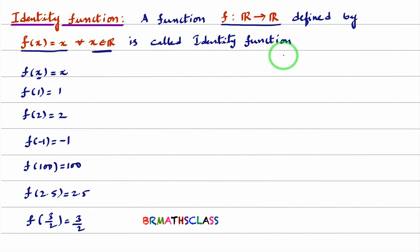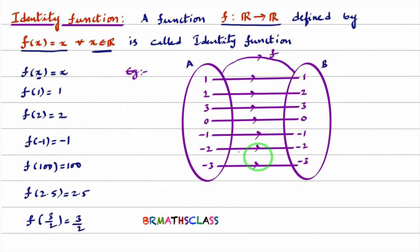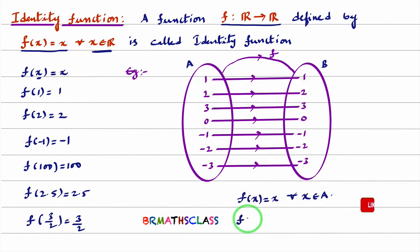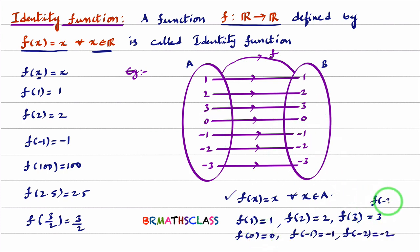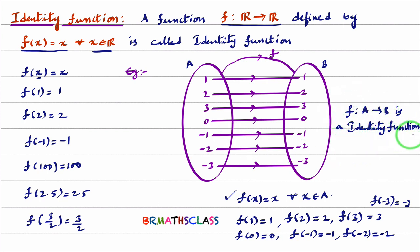We will try to understand the identity function with an example. Observe this example — is it a function or not? Every element of the first set is used, and it is used only once, so it is a function. Now we need to check if this function is an identity function. From the diagram, f(1) is 1, f(2) is 2, f(3) is 3, and f(-3) is -3. This function satisfies the condition f(x) = x, so we can say this function is an identity function.